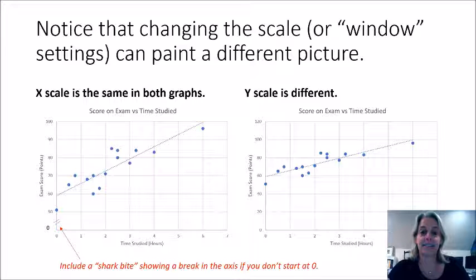So when we plot our data and we enter it in list one and list two in our graphing calculator, changing the scale or the window settings of the graph can really make a big difference in what your picture looks like. And it can influence whether your brain thinks that the data is really strongly clustered together or not. So you'll notice the graph on the left has a different y scale than the graph on the right. The graph on the left starts at 0 and goes to 100, but it breaks, it goes from 0 to 50 and then starts incrementing in increments of 10 points. Whereas the graph on the right starts at 0 with no break and goes 0, 20, 40 and so forth every 20 points. So you'll notice that we like to include what we call a shark bite or a break in the graph to show that the distance between 0 and 50 is different than every other increment on the y axis. So that's important when you're putting your graph on paper.